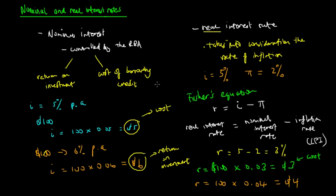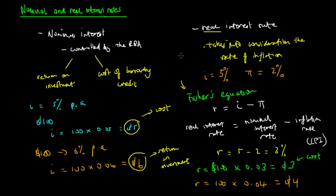So that is the difference between nominal and real interest rates. The real rate of interest is determined by the Fisher equation, simplified as R equals I minus the inflation rate. The nominal rate is the actual amount controlled by the RBA, whereas the real interest rate takes into account the rate of inflation, which may depress our purchasing power.